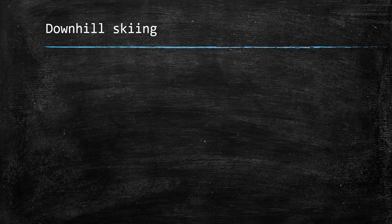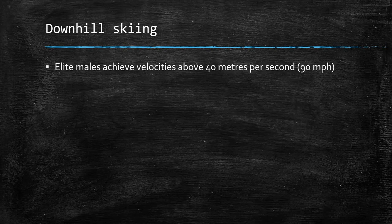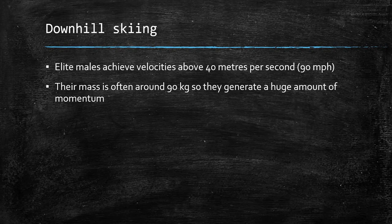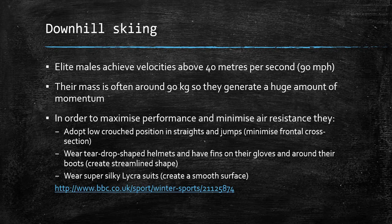Looking specifically at downhill skiing: elite males achieve velocities above 40 metres per second — equivalent to 90 miles per hour — with a mass often around 90 kilograms, generating huge momentum. To maximise performance and minimise air resistance, they adopt a low crouch position on straights and jumps to minimise frontal cross-section, wear teardrop-shaped helmets, have fins on their gloves and boots to create a more streamlined shape, and wear super silky lycra suits. You can find more on the BBC website under winter sports.